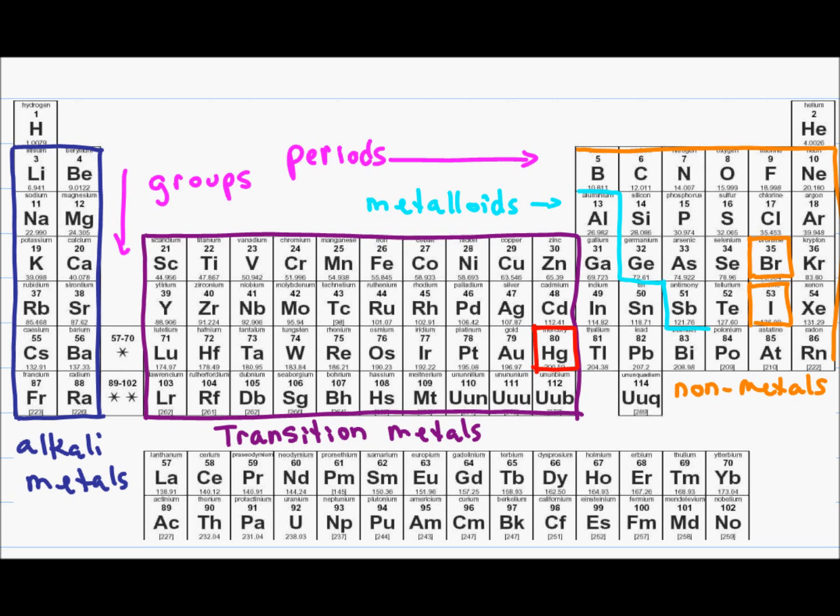Specific groups within the nonmetals include group number seven, which are your halogens, also called halides in organic chemistry. All the way to the right, you have your noble gases. Noble gases, as their name suggests, are atoms that act like nobility and don't like to mix with other atoms. This is because they have full octets and therefore have no desire for other electrons and no desire to interact with other atoms.